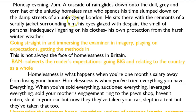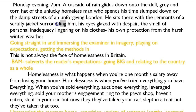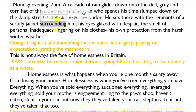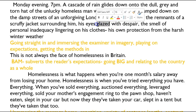'He sits there with the remnants of a scruffy jacket surrounding him.' 'Sits' is in one sense not that descriptive, but it portrays him as unable to move. And why is he unable to move? Because he's surrounded by his jacket. That's a really odd verb — 'surrounding' suggests the jacket is like an army or a gang surrounding him, so even though it's odd, it gives you the sense that he's threatened by his own clothes. 'His eyes glazed with despair' — instead of just saying 'closed,' 'glazed' gives you the idea of hopelessness.